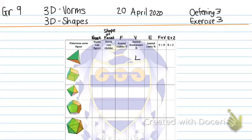Good day Grade 9, this is your 3D shapes exercise for the 20th of April, Exercise 3. This is your Day 13 exercise. Let's look at this table. I've put the English on top first. They're asking for these Platonic figures — the name of the shape, the shape of the faces, and the number of faces.